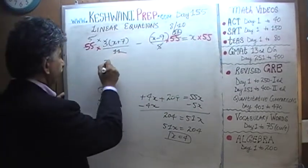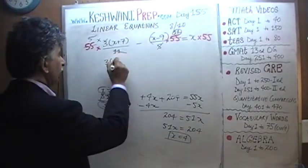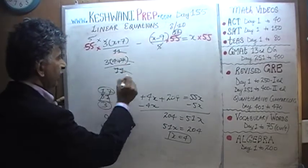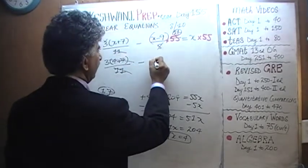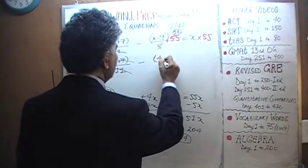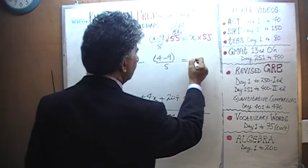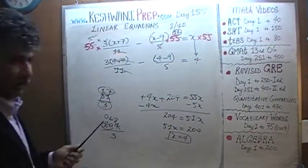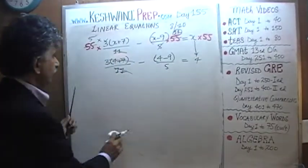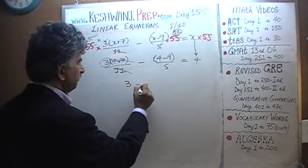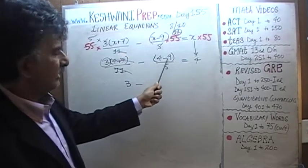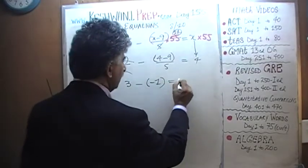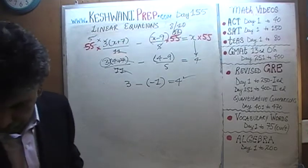So we have 3 times x plus 7. x we are claiming to be 4. So 4 plus 7 over 11. As you can clearly see, 4 plus 7 is 11. 11 divided by 11 is going to cancel out. So we're just left with 3 here. Minus x minus 9. x is 4. 4 minus 9 over 5 has to equal x which is 4. So here we have 3. 3 minus 4 minus 9. 4 minus 9 is negative 5. Negative 5 over 5 is a negative 1. 3 minus a negative 1 does in fact equal 4. It does work.